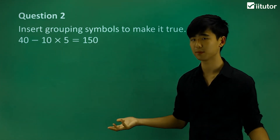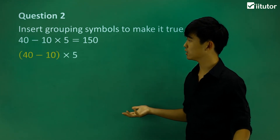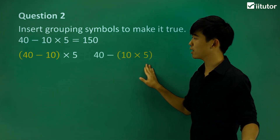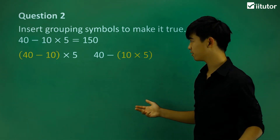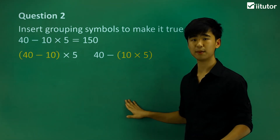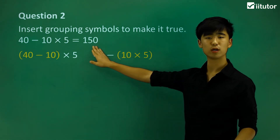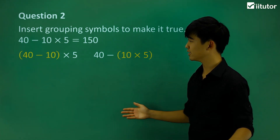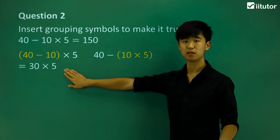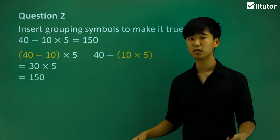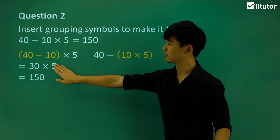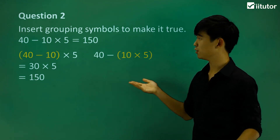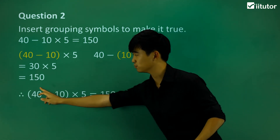So where are the possible places we can place grouping symbols? Let's try putting brackets outside of 40 minus 10, and also let's try putting it outside of 10 times 5. Let's calculate each of these cases to see which one gives me 150. So 40 minus 10 is 30, and 30 multiplied by 5 will give me 150. We already found it — this set of grouping symbols gives 150. So the answer to question 2 is these grouping symbols here — that's how we make the statement true.